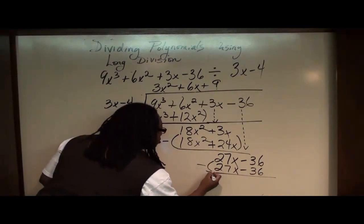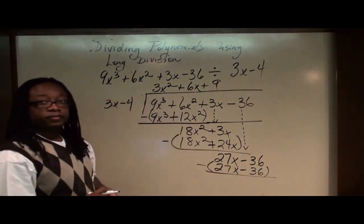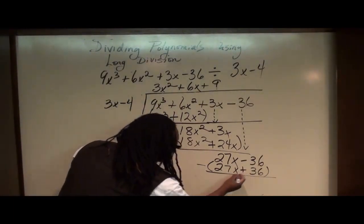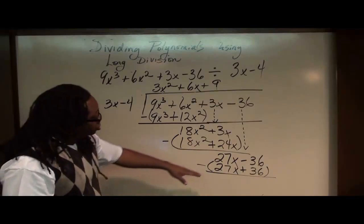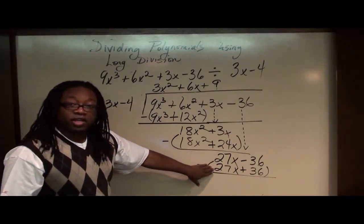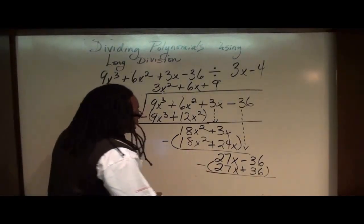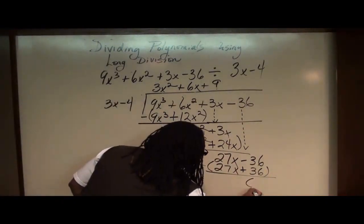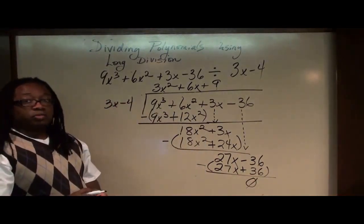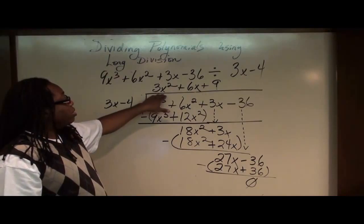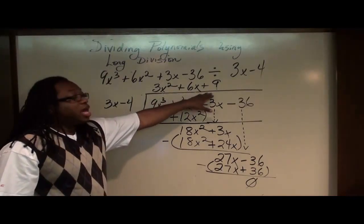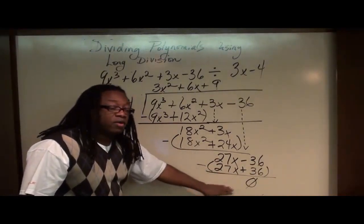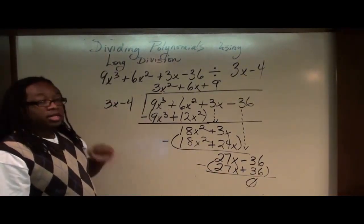What do we do here again? We subtract. Remember, we have a situation where we have a negative here and a negative here, so this must be a positive. And so, we subtract 27x minus 27x, it gives us 0. And if we subtract 36 from negative 36, it also gives us 0. So our solution to this problem is 3x squared plus 6x plus 9, which is called our quotient, and our remainder is 0. That means this number divides evenly by this number. Thank you.